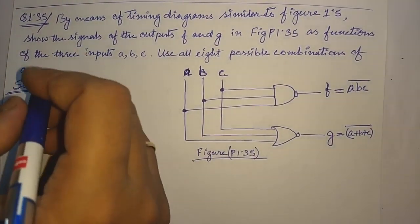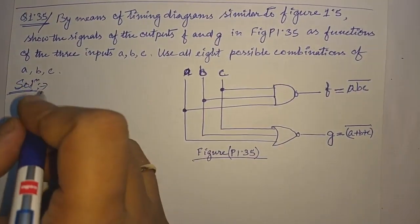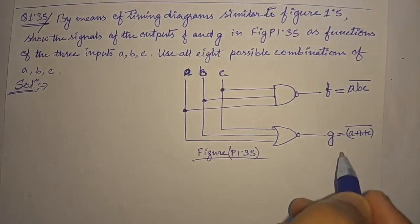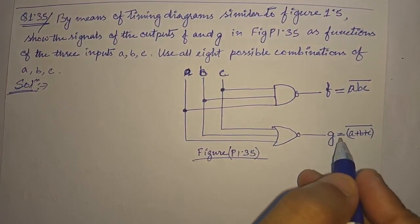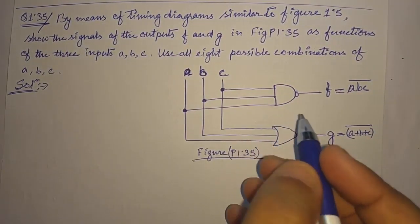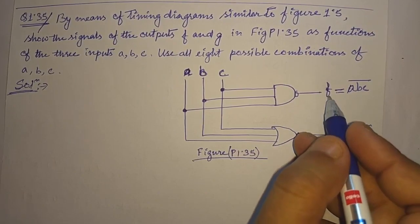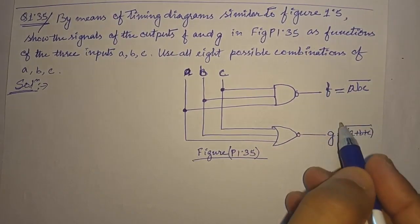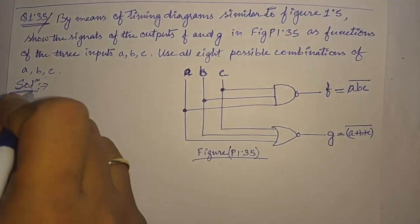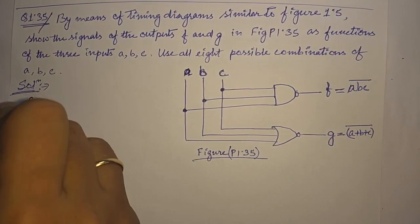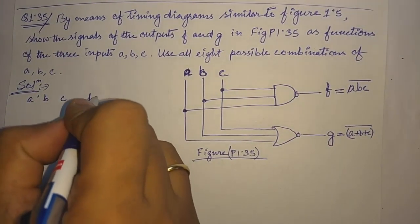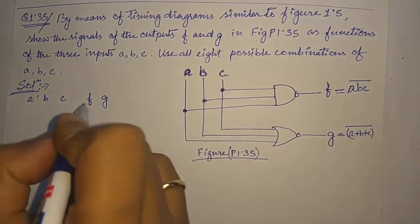Now let us first draw the truth table of a, b, and c, and the outputs f and g. We will draw the truth table showing input a, b, and c, and outputs f and g.